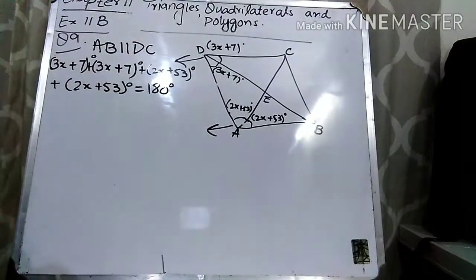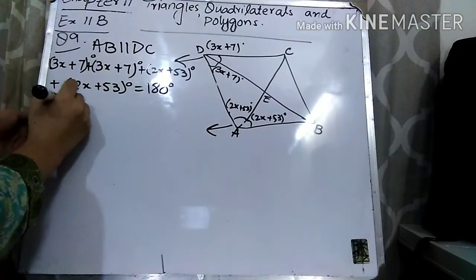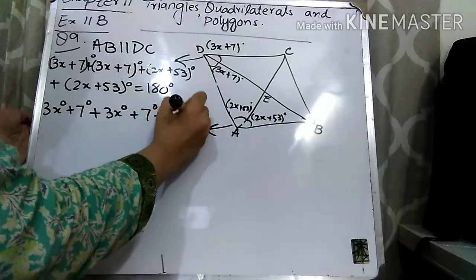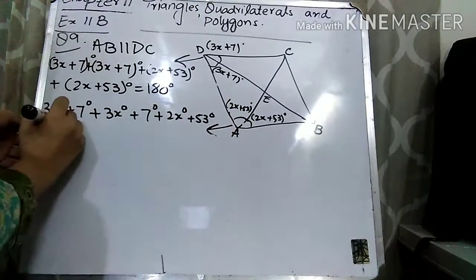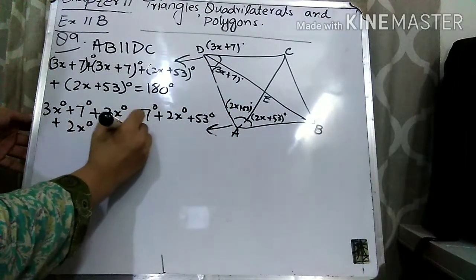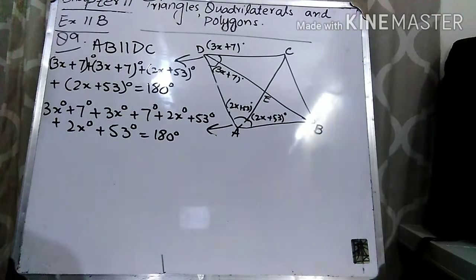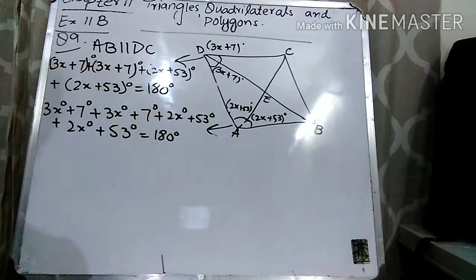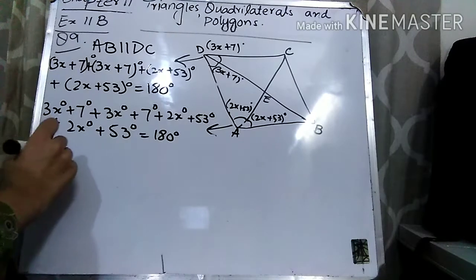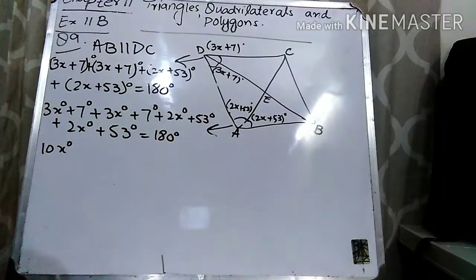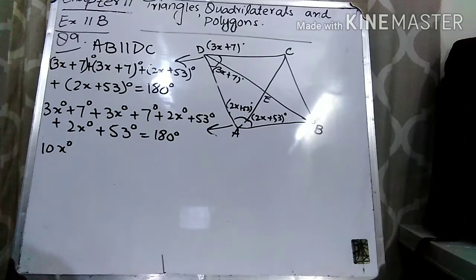The property here is that the sum of interior angles of parallel lines is equal to 180 degrees. Now we are going to open up the brackets: 3x degrees plus 7 degrees plus 3x degrees plus 7 degrees plus 2x degrees plus 53 degrees plus 2x degrees plus 53 degrees is equal to 180 degrees. Now collect like terms together — first the x terms: 3 plus 3 is 6, 6 plus 2 is 8, 8 plus 2 is 10. So 10x degrees. Now add the constants: 7 plus 7 is 14, 14 plus 53 is 67, 67 plus 53 is 120.